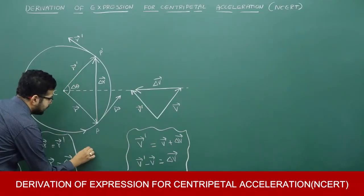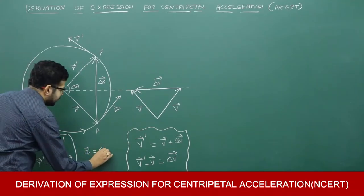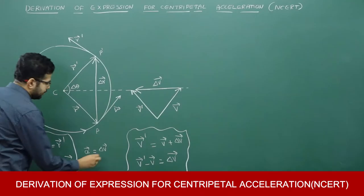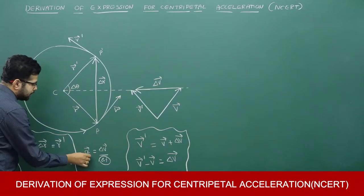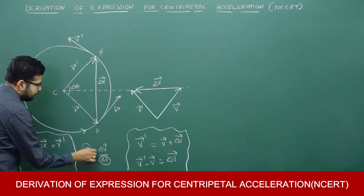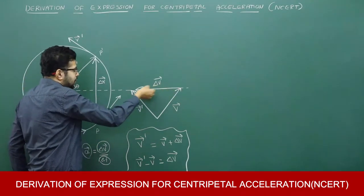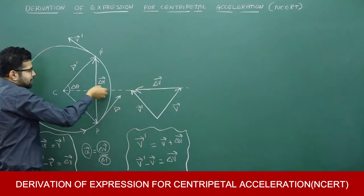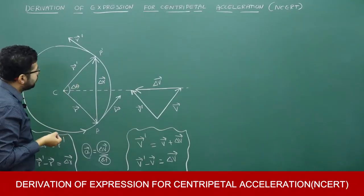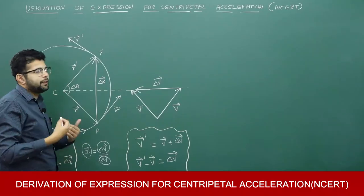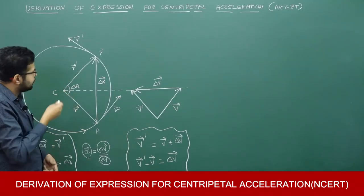What is acceleration? Acceleration is equal to rate of change of velocity — delta v by delta t. Average acceleration is delta v by delta t, and delta t is a scalar, so the direction of acceleration is the direction of change in velocity. Here the direction of change in velocity is towards the center along the radius, so acceleration is also towards the center — that is why we call it centripetal acceleration.